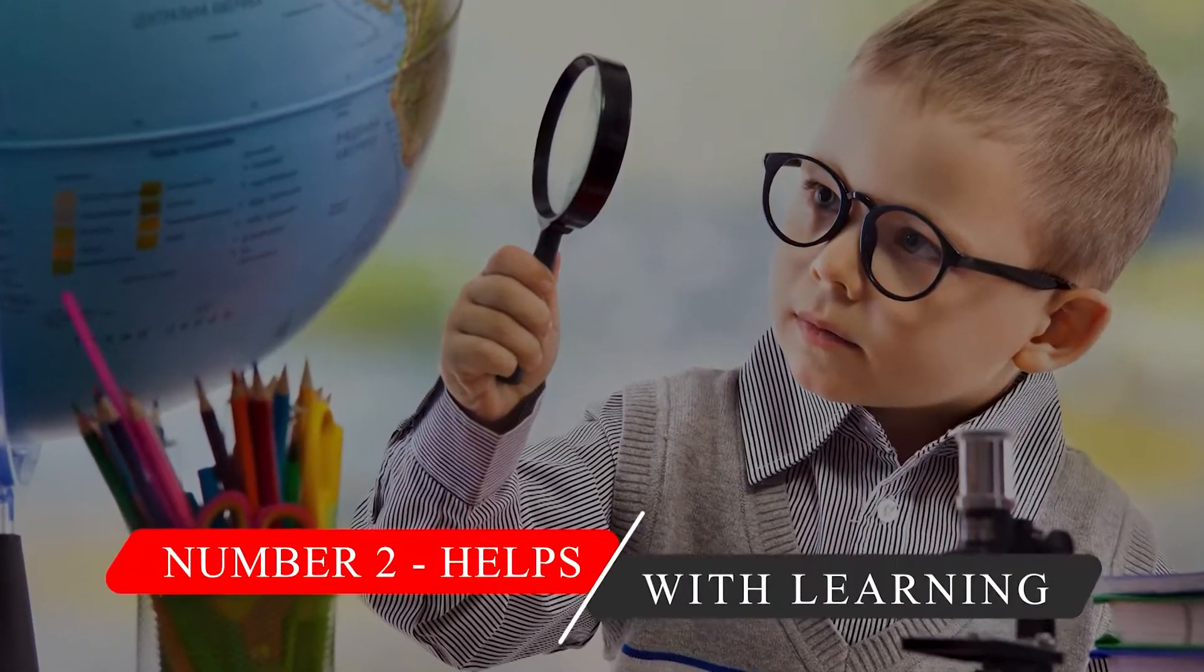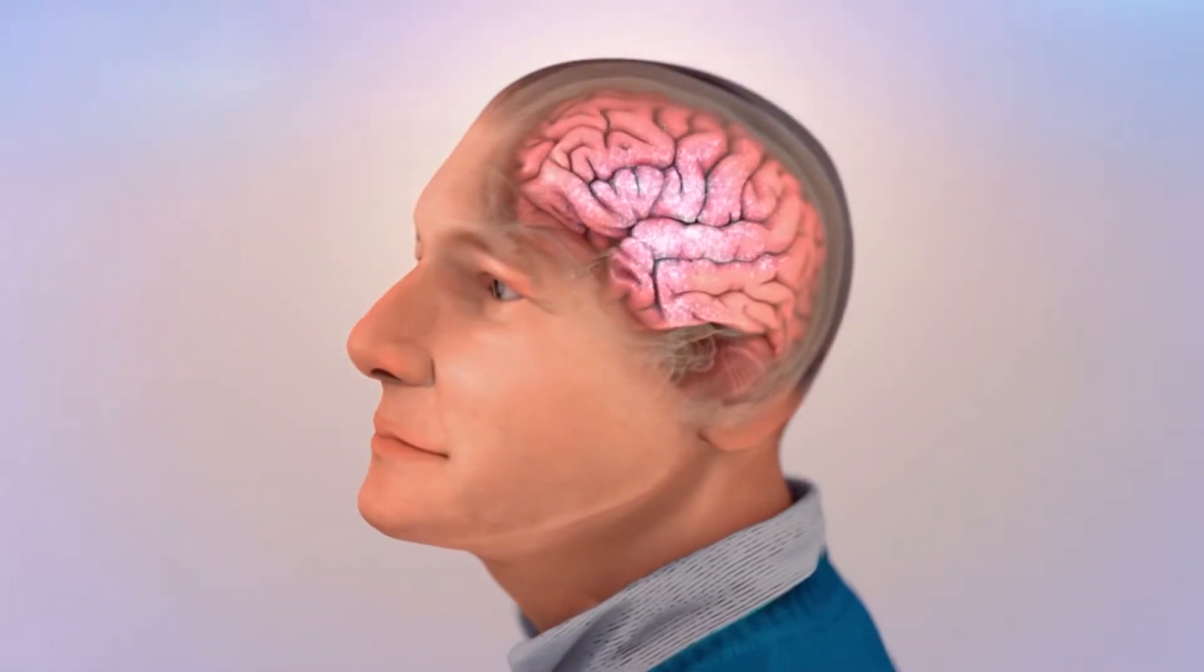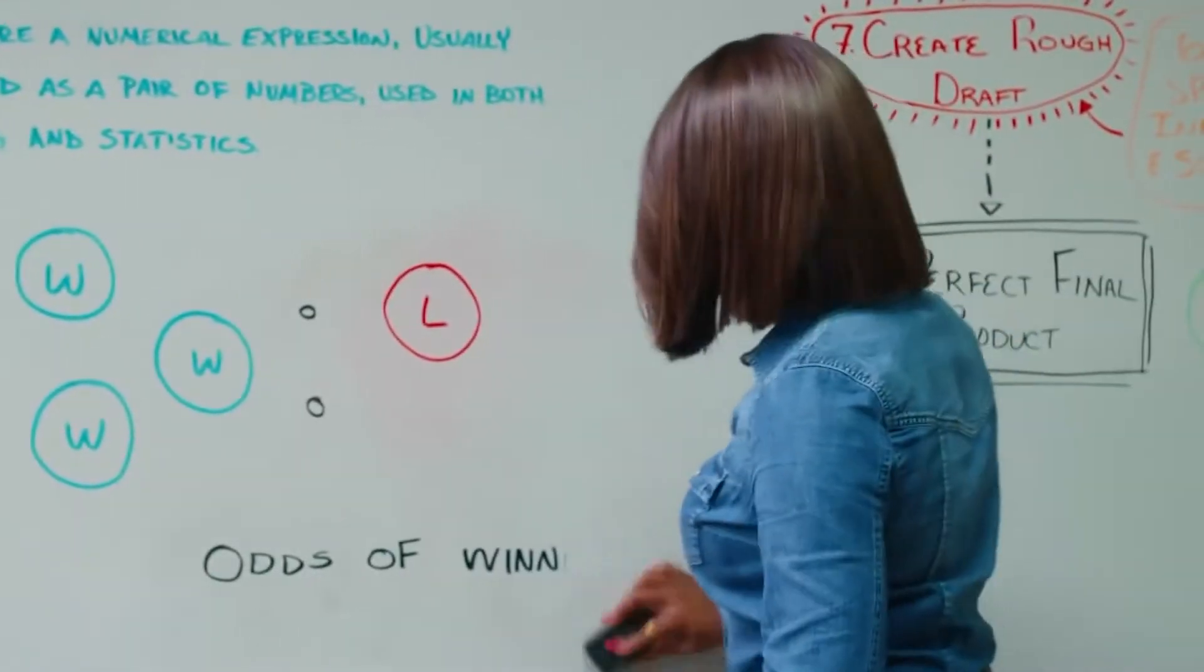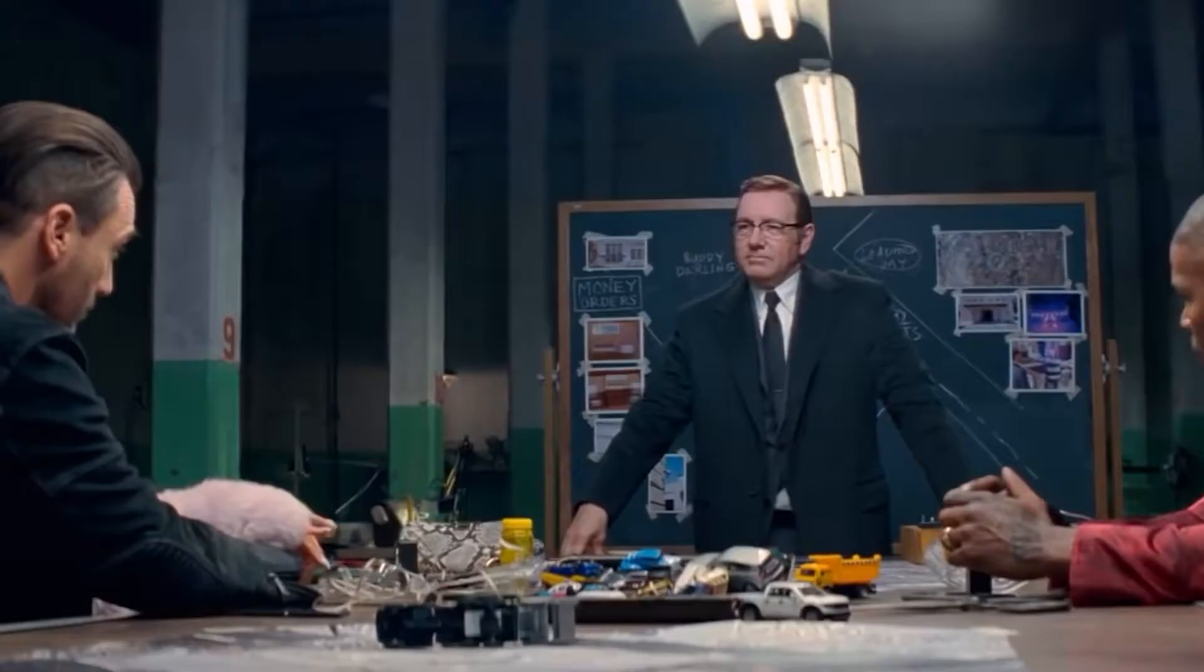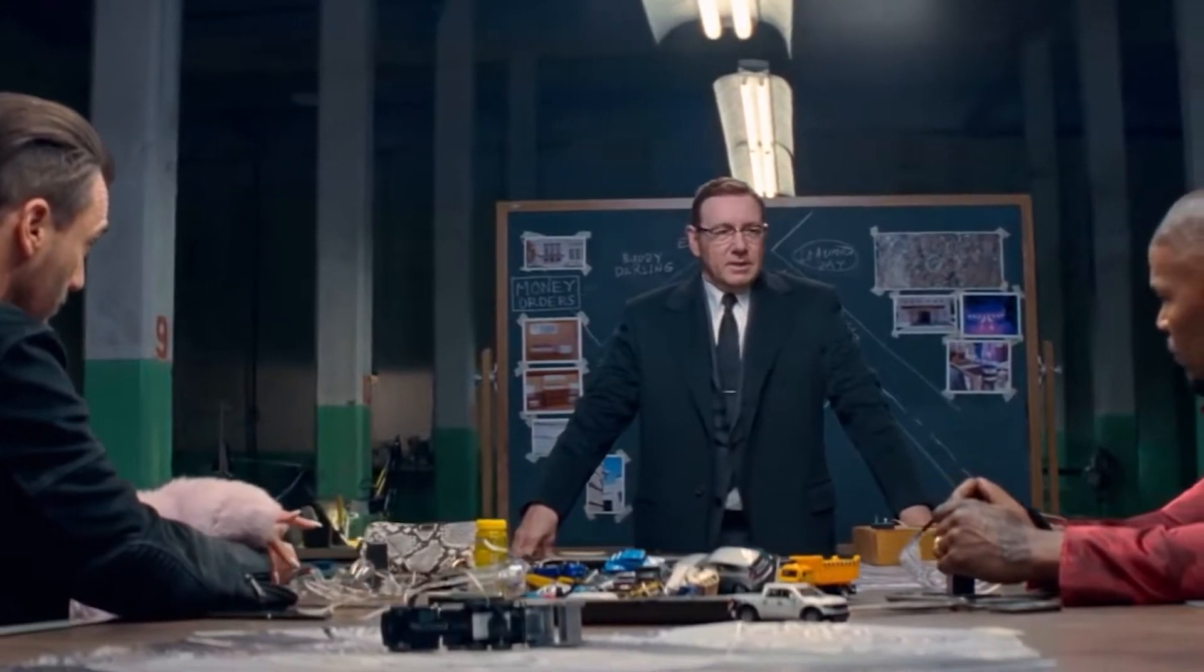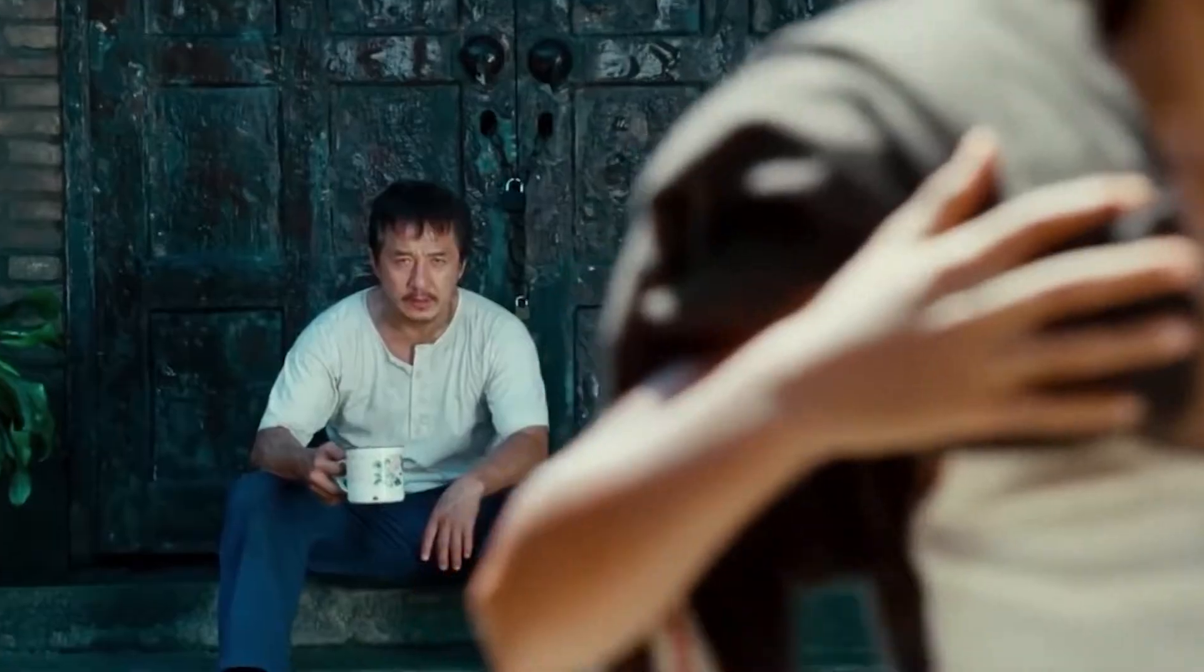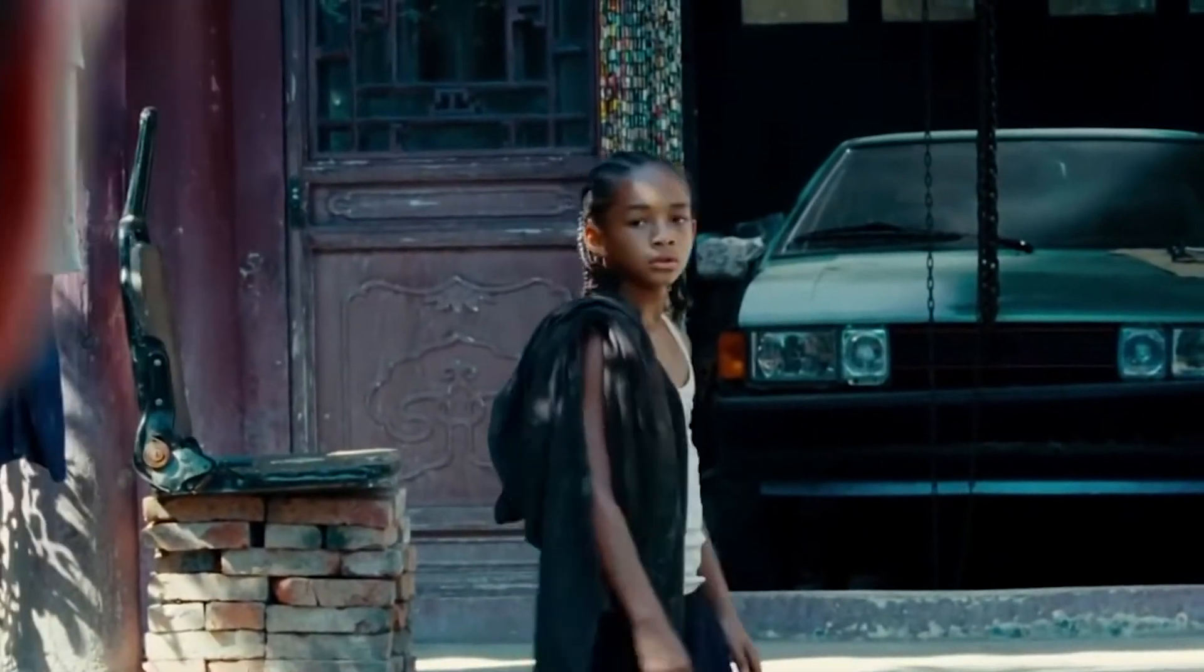2. Helps with learning. The reticular activating system is the major reason that you learn a new word and start to hear it everywhere. This is the reason we can try to ignore a crowd full of talking people, yet it suddenly snaps to our attention when someone says our name, or at least something that sounds familiar.